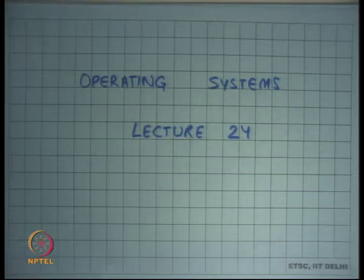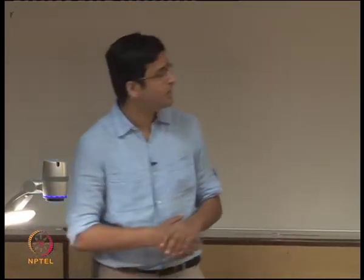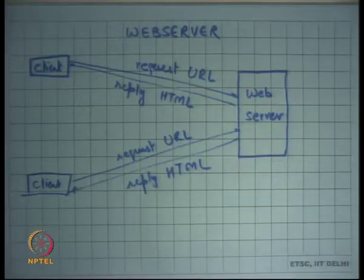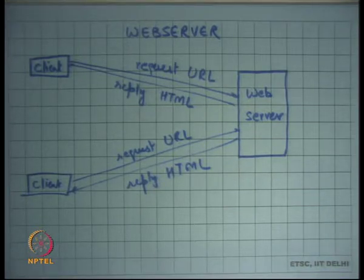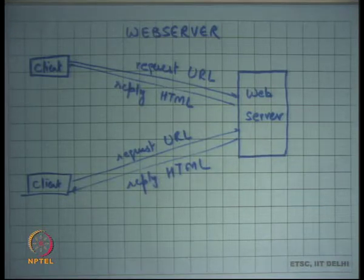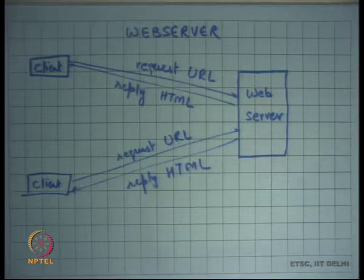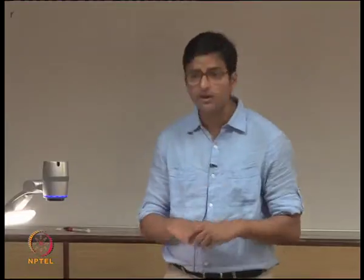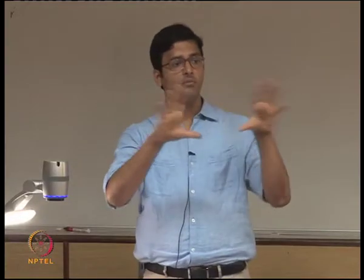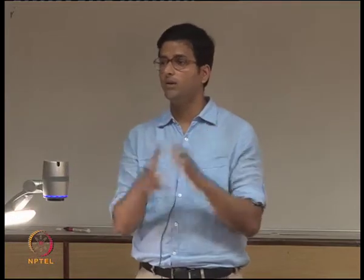Welcome to Operating Systems Lecture 24. Last time we were talking about locking, fine-grained locking, what kind of problems we can run into while doing fine-grained locking, and how deciding which locks to use and where to put the acquire and release statements is a bit of an art. One needs to do it by looking at the program as a whole.